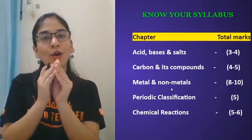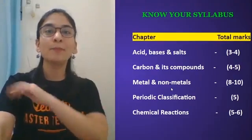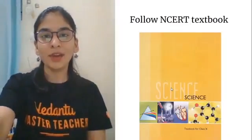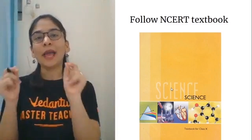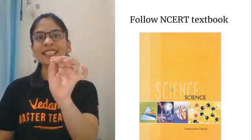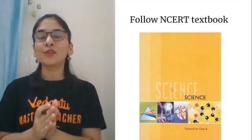Periodic classification is more about trends - how property changes in a period and in a group. See, I've given you the whole chemistry idea in five minutes: what is more important, what is not that important, how you can plan in a good way.